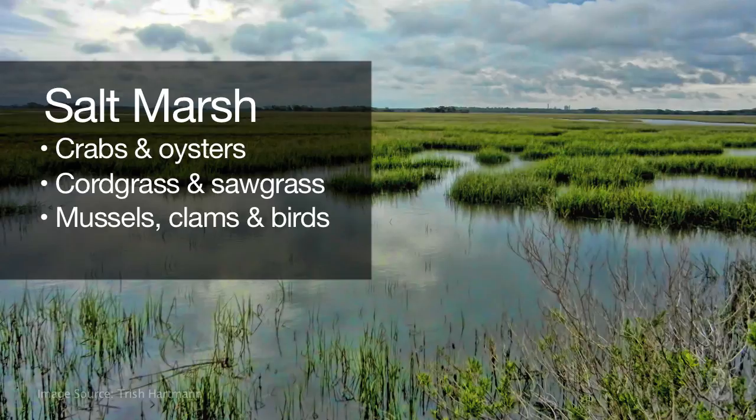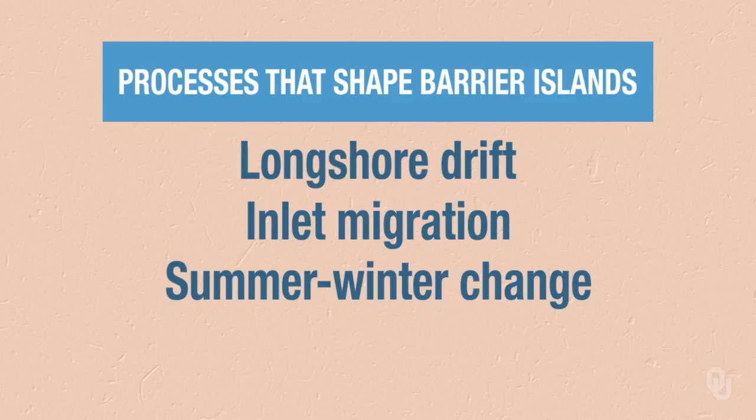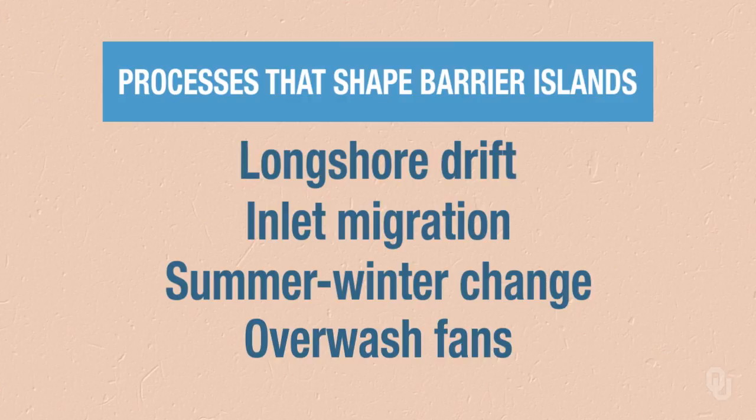What are the major processes that shape barrier islands? This is the real guts of what I want to talk about. There are four major processes: longshore drift, inlet migration, the summer-winter change in the beach, and overwash fans. All of these are very important.